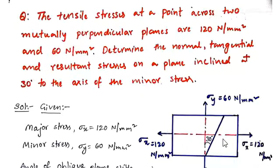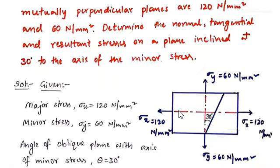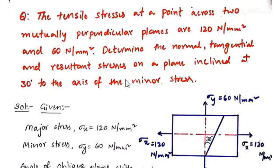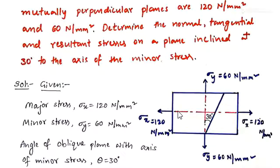The tensile stresses at a point on two mutually perpendicular planes are given. We are taking the two mutually perpendicular directions as x and y. The major stress in the x direction is 120 N per mm² and the minor stress is 60 N per mm². The oblique plane on which we find the normal and shear stresses makes an angle of 30 degrees with the axis of the minor stress. On this oblique plane we find the normal, tangential, and resultant stresses.